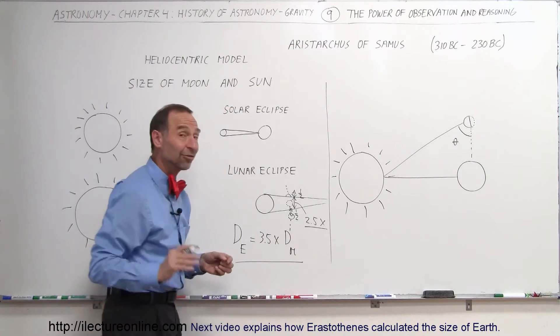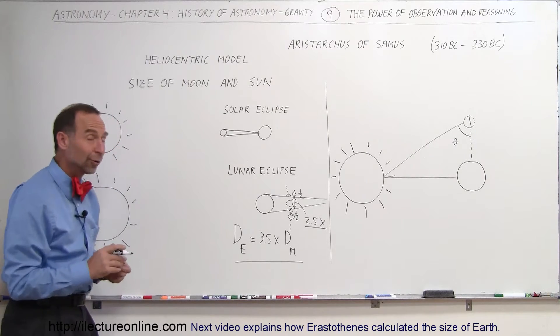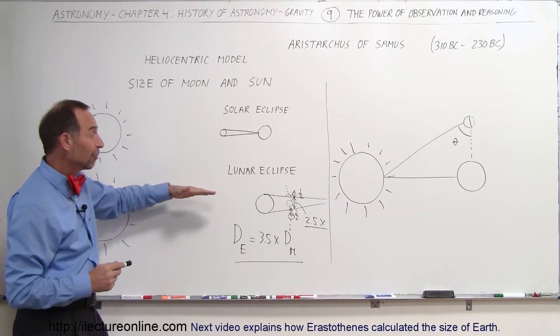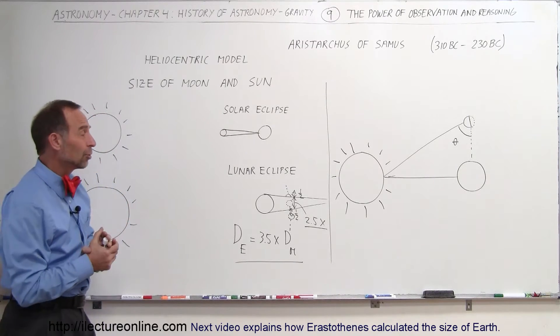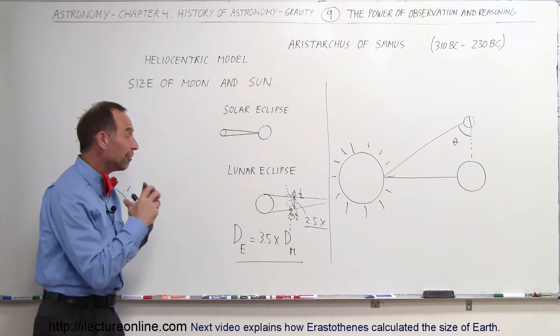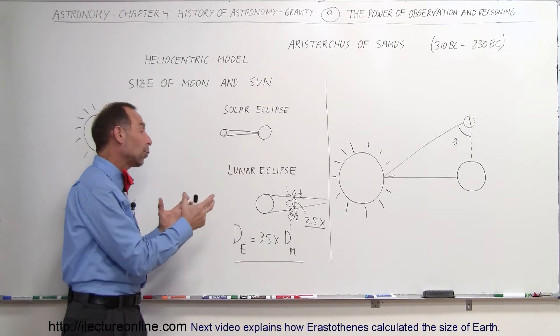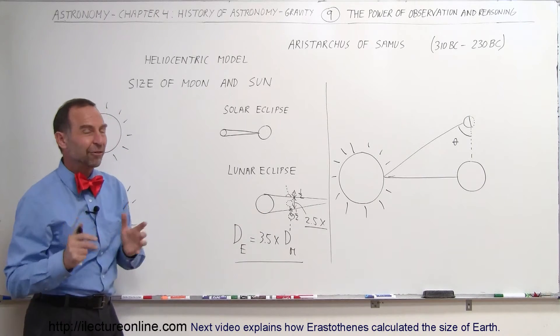And guess what? That's fairly accurate. That is about the relative size of the Moon and the Earth. So he did a tremendous job, just by observing the eclipses, that the Earth was about 3.5 times the diameter of the Moon. So that causes the size of the Moon, or the volume of the Moon, to be about 1/50 of the volume of the Earth. In other words, the Moon can fit into the Earth about 50 times.